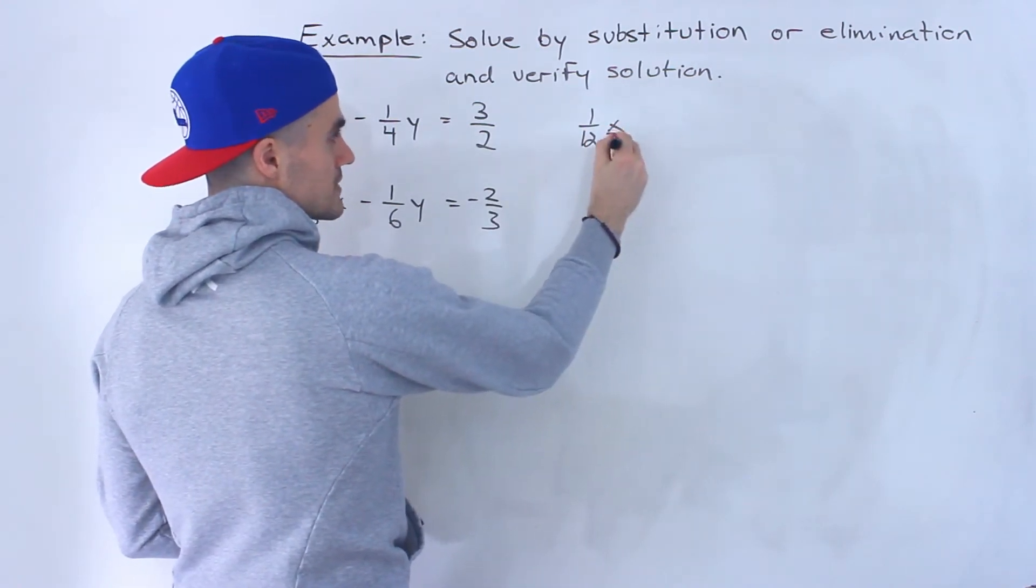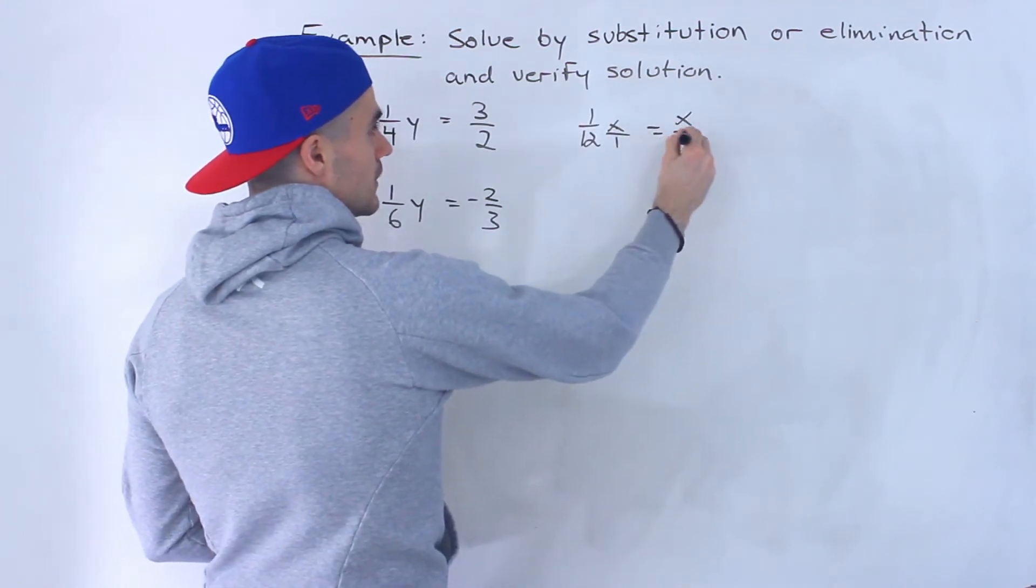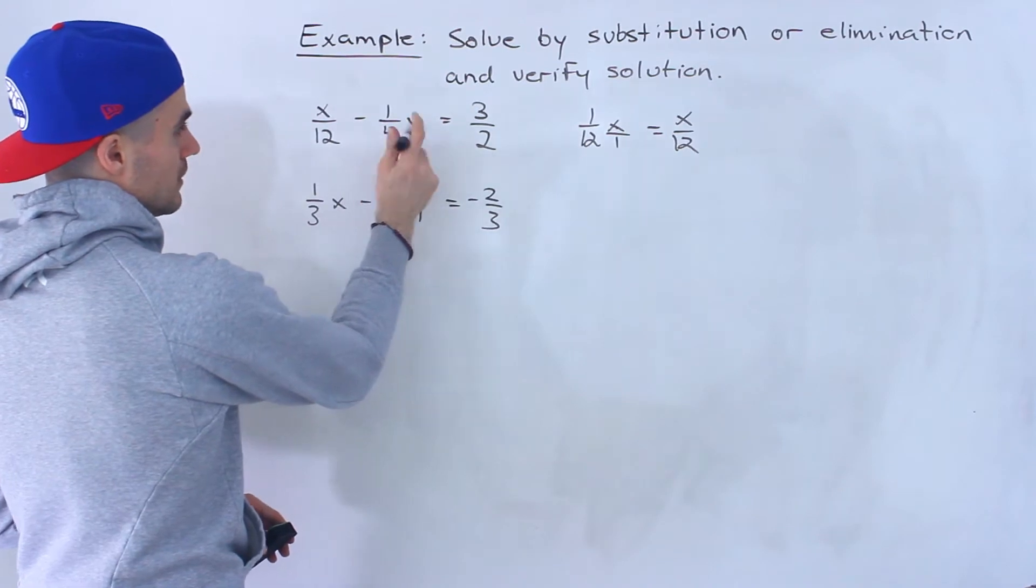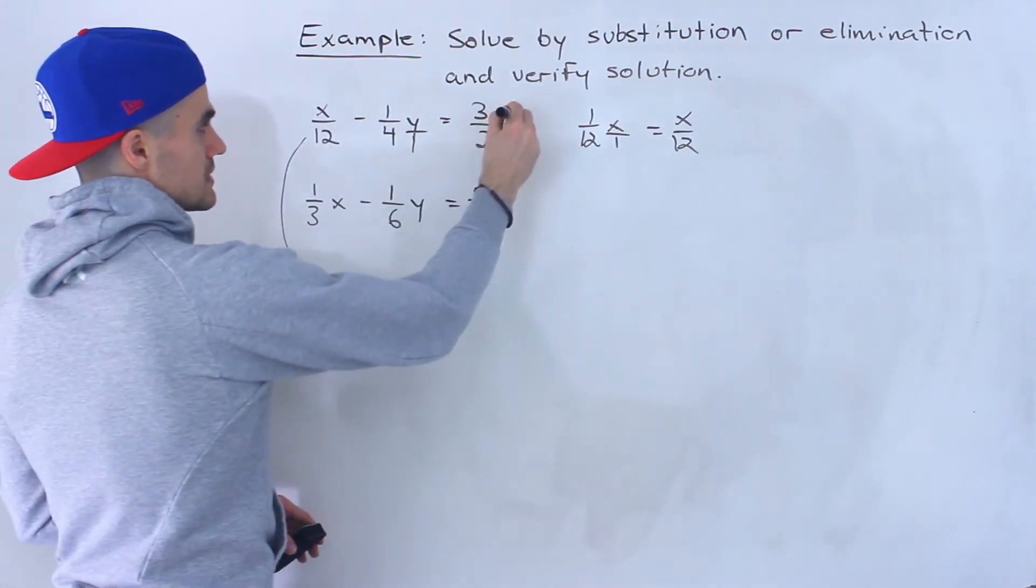Another way this could have been written is 1 over 12x. Then if you combine it this x is like over 1, x times 1 is x, 12 times 1 is 12. So this one's already combined but notice this one here we can combine. So this is line 1.